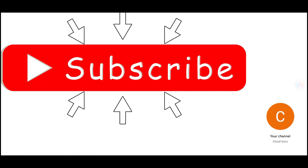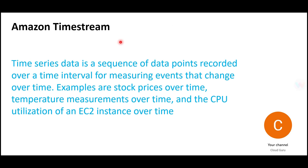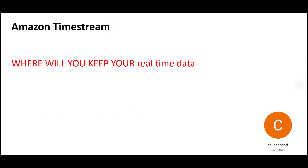For example, you need to know what was the stock price at 11 AM, what was the stock price at 1:30 PM when the European market opens. When you have such datasets where not only the final price of the stocks but all the intermediate price changes over the day have to be stored, the volume of data would be very high.